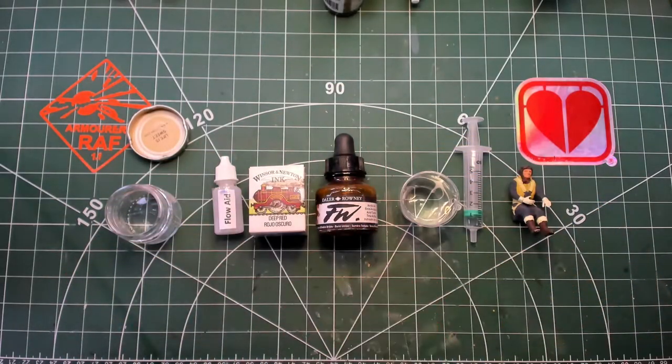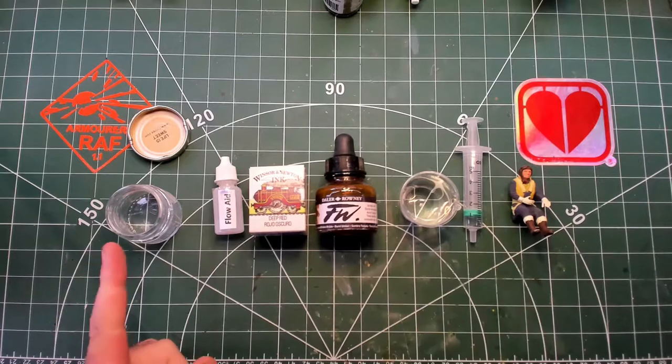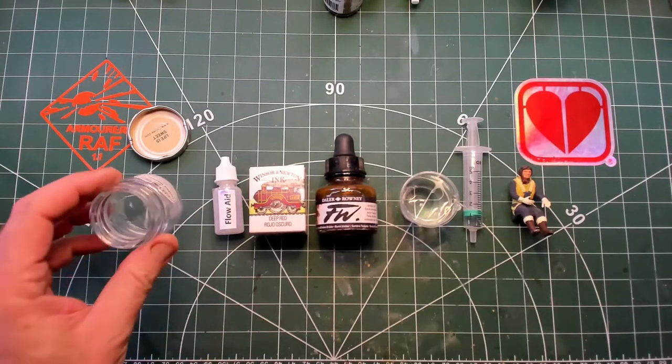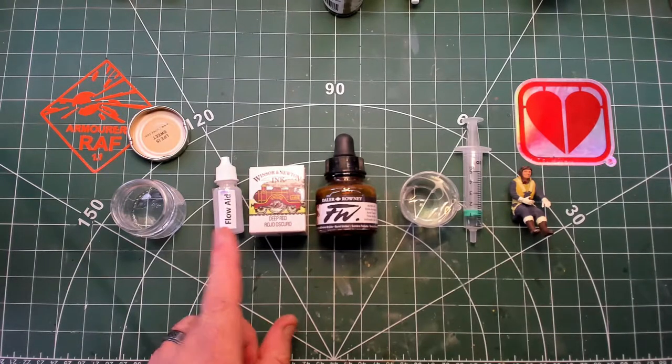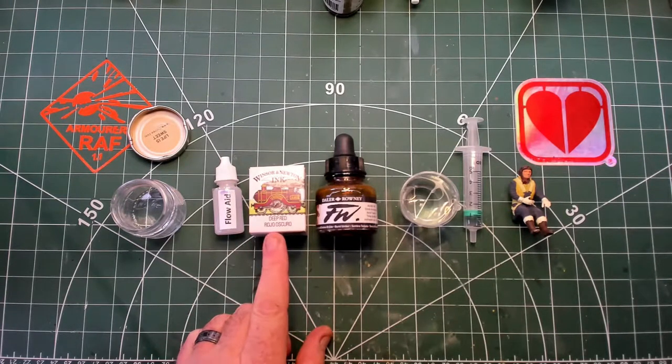What you'll need: a container which has smeared some washing up liquid into it—this breaks the surface tension—a flow aid, and Winsor & Newton Deep Red, the clear ink.